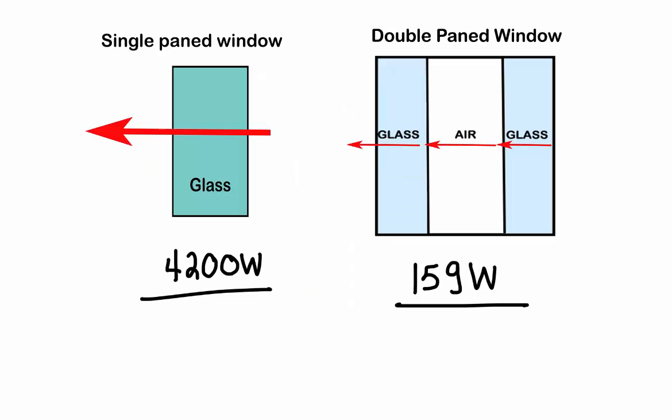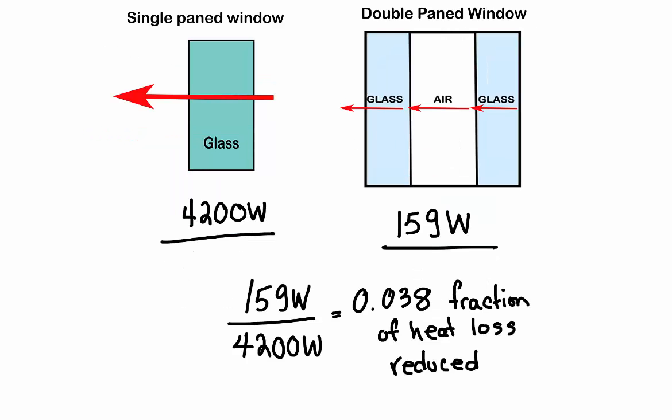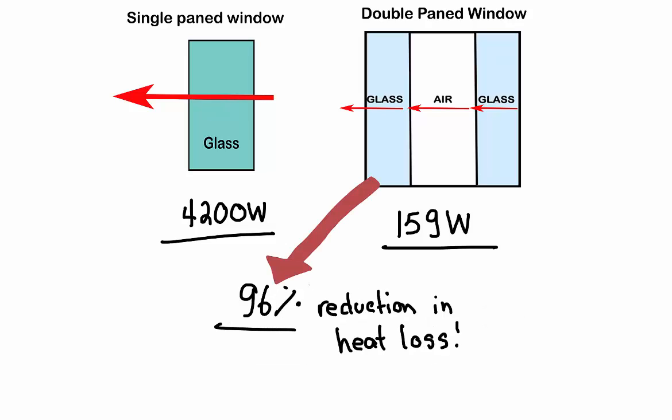Let's compare the two windows now. So this fraction is the amount of heat loss that is reduced. So the salesperson was correct in promising a reduction in heat loss of more than 90% compared to a single pane window.